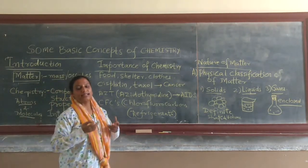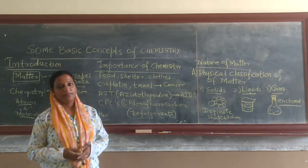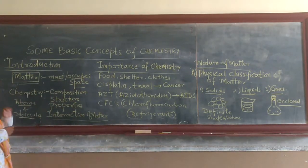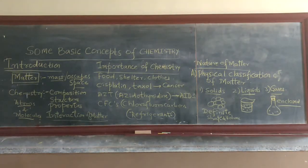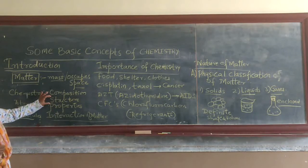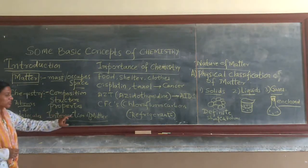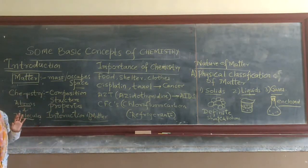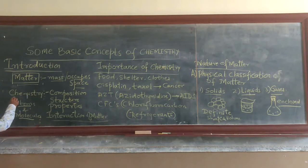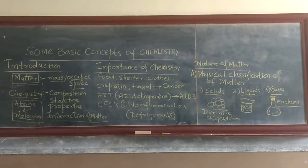Whatever you come across in this universe is made up of matter. Then how to define chemistry? Chemistry is a branch of science that deals with the composition, structure, properties, and interaction of atoms. In simple terms, chemistry is the science of atoms and molecules.